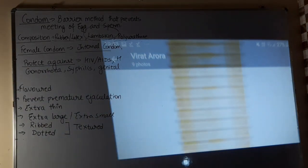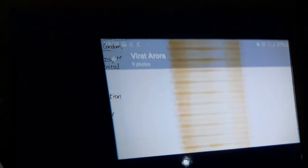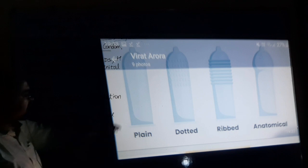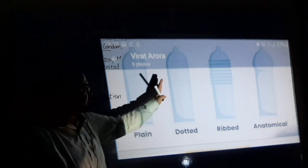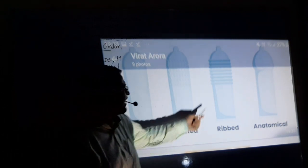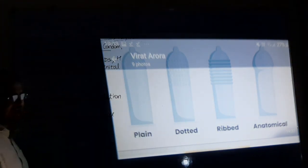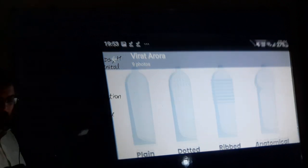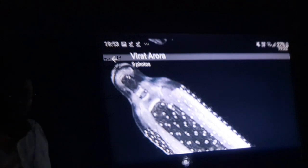Here we have the categories of condoms. It's a simple or plain condom, this is the dotted one which contains textured dots on it, then we have ribbed one, and last is anatomical which has the shape according to the organ or penis. Here we have this dotted condom, it contains dot-like structure on its surface. Thank you everyone.